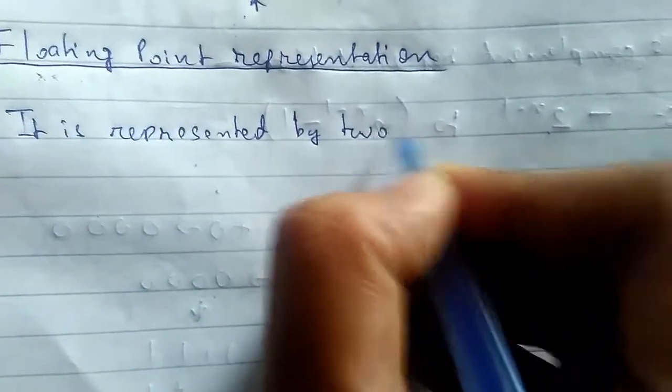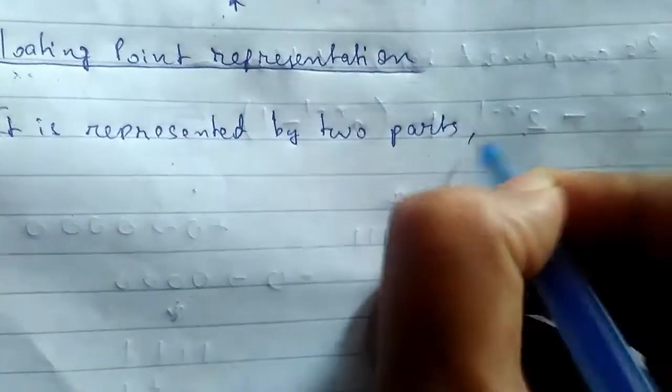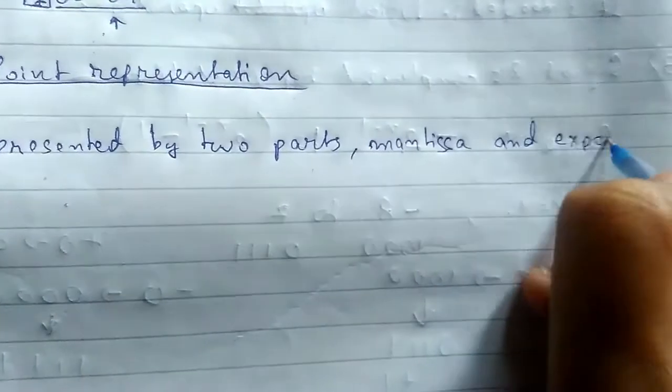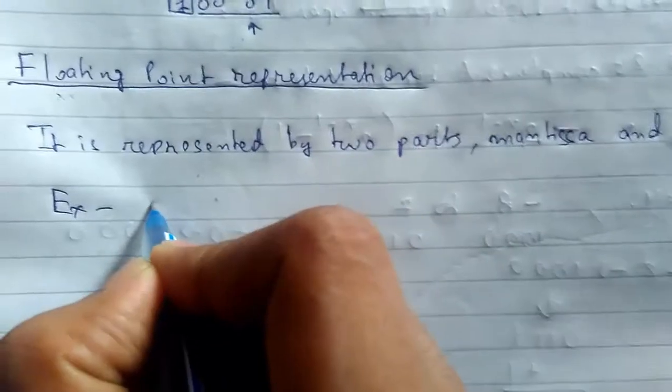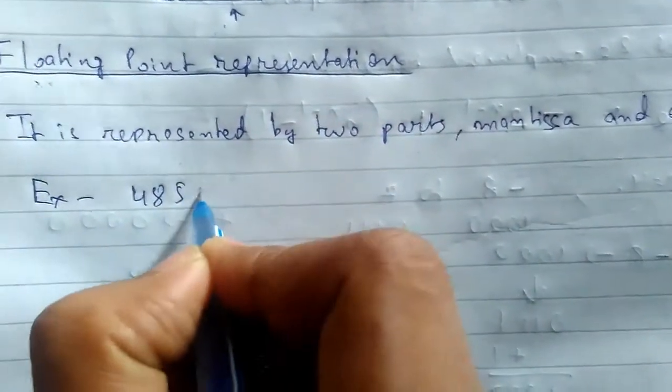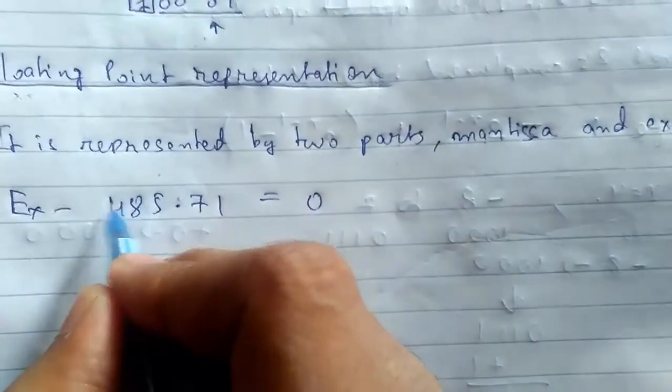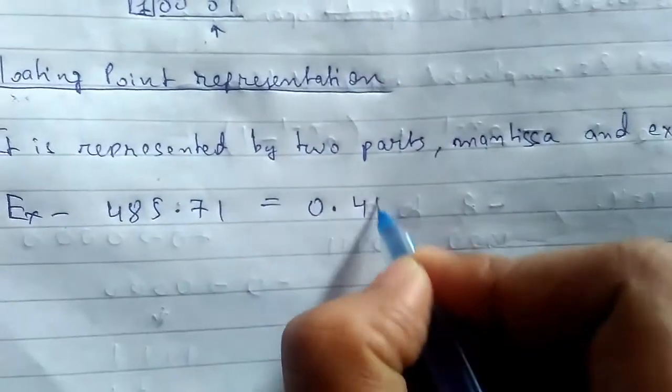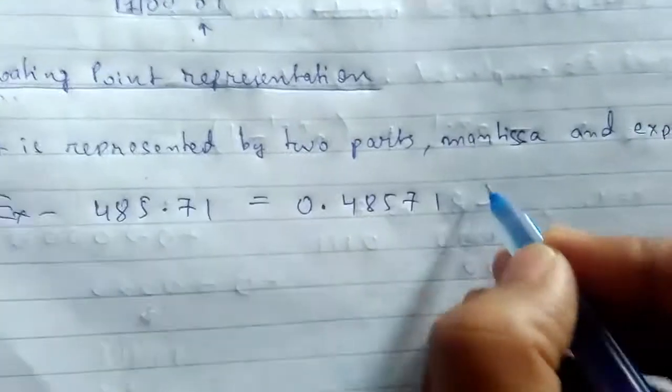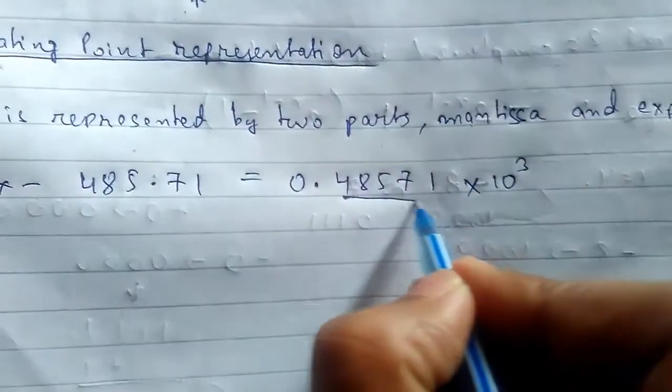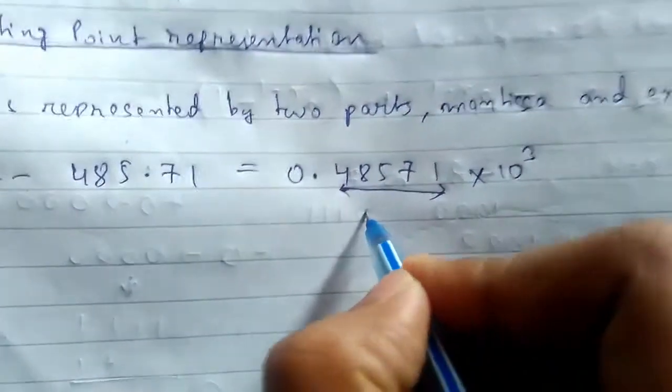For example, suppose we have 485.71. We can write this as we can shift the decimal place to here, so this would be 0.48571 times 10 to the power 3. We have moved 3 places. This part here is the mantissa part and the 3 here is the exponent.